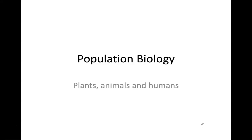Population biology — we're going to talk about plants, animals, humans. We're an animal, but we're going to talk about how these organisms grow as a group. We're going to be focusing on population. Population is a group of a specific species. In these graphs, we're going to be following just one species at a time. You might have more than one species, but they'll be graphed individually, because when we compare populations, we compare them as individual groups.